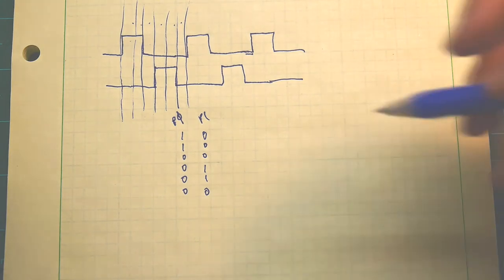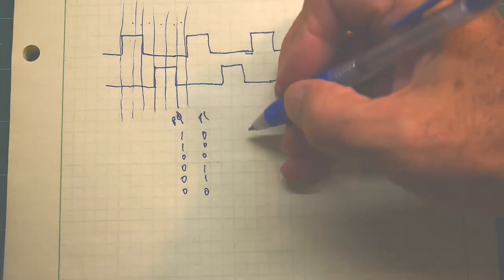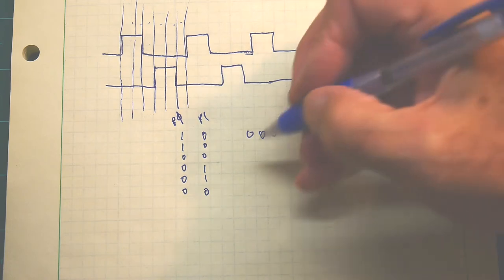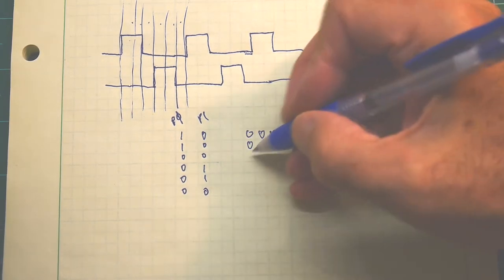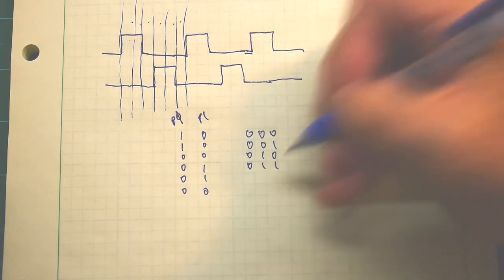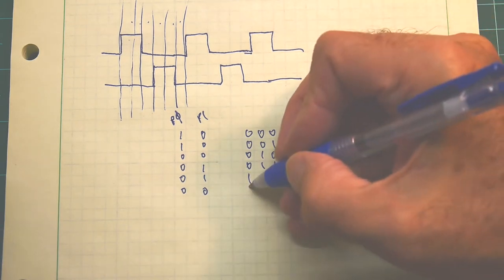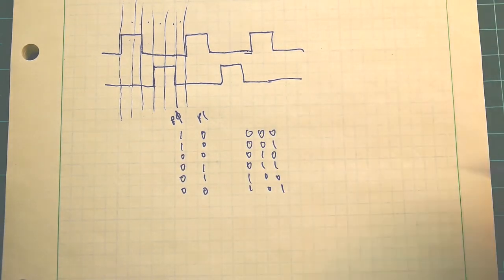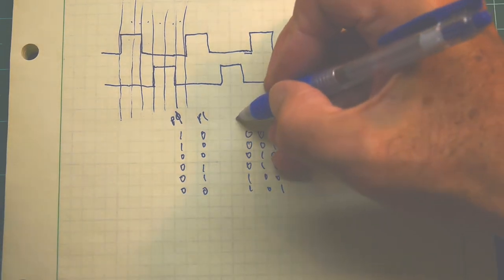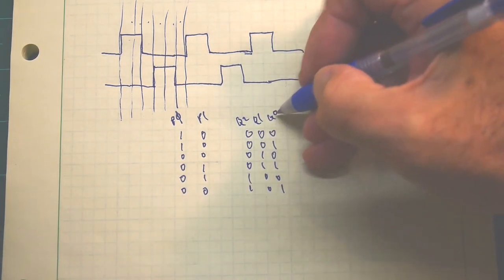So let's build a counter. Let's assume that we've built a 3-bit counter. We're going to have zero, zero, zero, zero, zero, one, zero, one, zero, zero, one, one, one, zero, zero, and one, zero, one. So that's binary counting from zero to five. We'll call these Q2, Q1, and Q0.